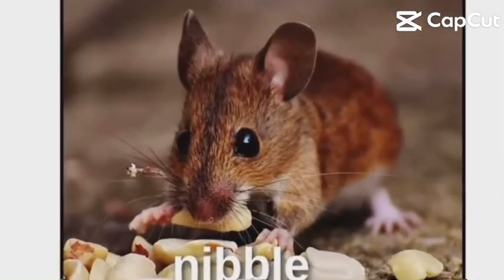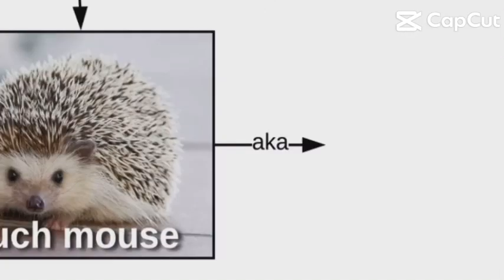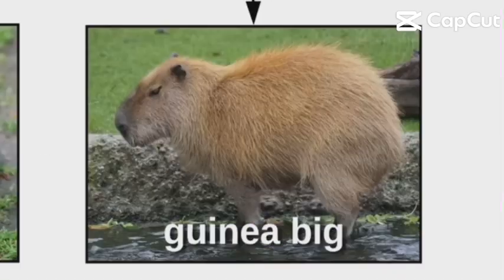Cheese boys have many relatives, like the tree rat, the ouch mouse, also called the spiky floof, the furry potato, the guinea pig, and mouse.